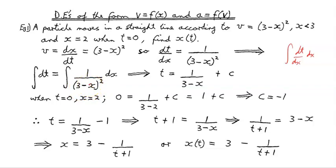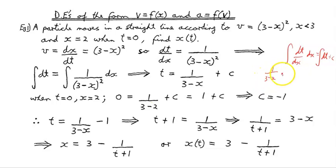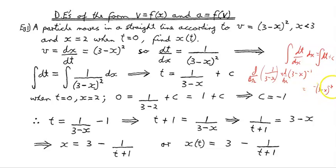This gives us the integral of dt. The integral of dt is the integral of 1 on (3 minus x) squared dx. Applying the integral tables, we get t on the left, and on the right 1 on (3 minus x). You can check that works: 1/(3−x) equals (3−x)^(−1), and differentiating gives −1·(3−x)^(−2)·(−1), which equals (3−x)^(−2), the same as 1 over (3 minus x) squared.